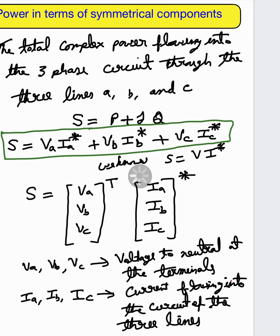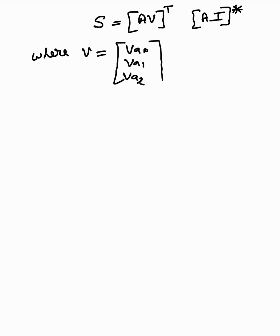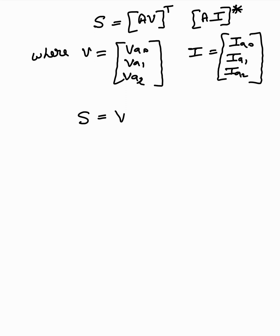We can write S equal to (A·V) transpose times (A·I) conjugate, where V is basically the zero, positive, and negative sequence voltages, and the current I is equal to the same — zero sequence current, positive sequence, and negative sequence current. So S equals V transpose times A transpose times A conjugate times I conjugate. This is equation number one.